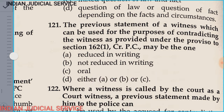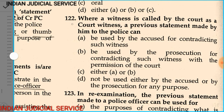Question number 121: The previous statement of a witness which can be used for the purpose of contradicting the witness, as provided under Proviso 2, Subsection 1 of Section 162 CrPC. Option A: reduced in writing. Option B: not reduced in writing. Option C: oral. Option D: either A, B, or C. The answer is Option A — reduced in writing.